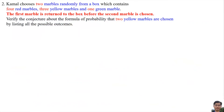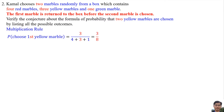Number 2: Carmel chooses 2 marbles randomly from a box which contains 4 red marbles, 3 yellow marbles and 1 green marble. The first marble is returned to the box before the second marble is chosen. Verify the conjecture about the formula of probability that 2 yellow marbles are chosen by listing all the possible outcomes. Using the Multiplication Rule: the probability of choosing the first yellow marble is 3 per 8.